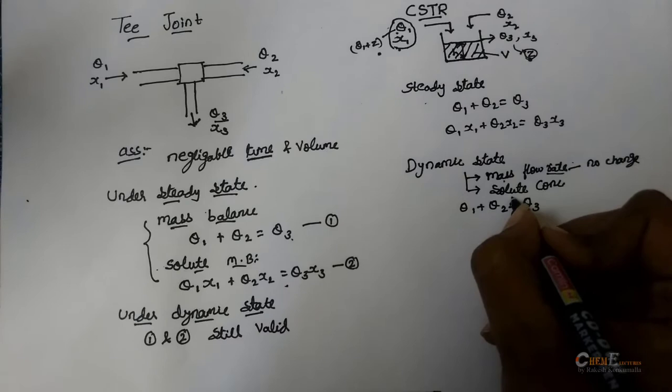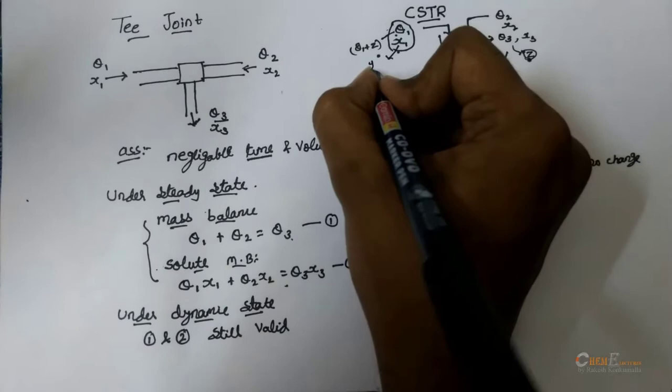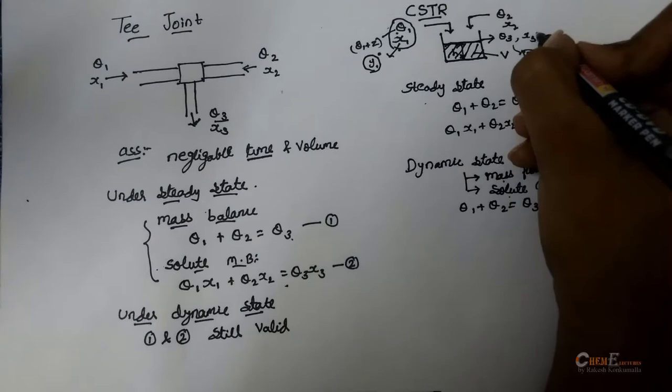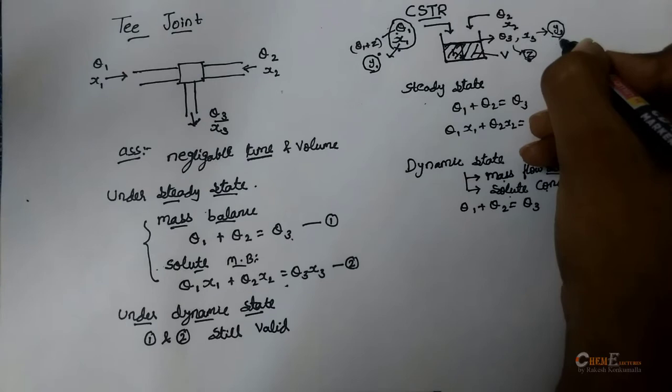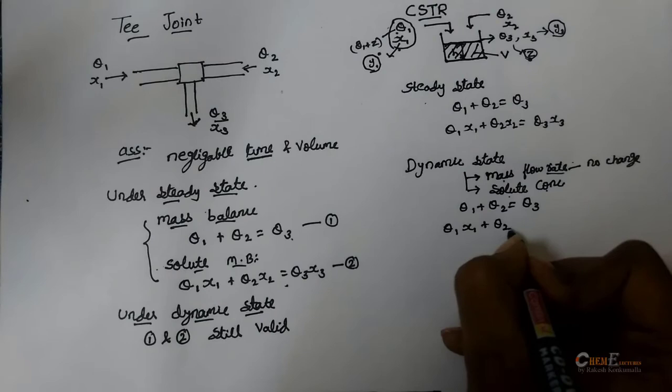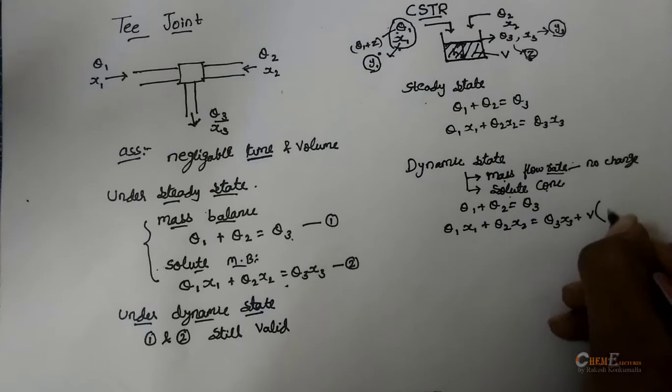Now, let us take that solute concentration changes. That is X1, it changed to some Y1. So, when it comes into the reactor, it takes some time to mix up and come with a different concentration of Y3. So, to account this time, we will be adding a differential term in the equation. So, the solute mass balance will be Q1X1 plus Q2X2 is equal to Q3X3 plus V dx3 by dt.